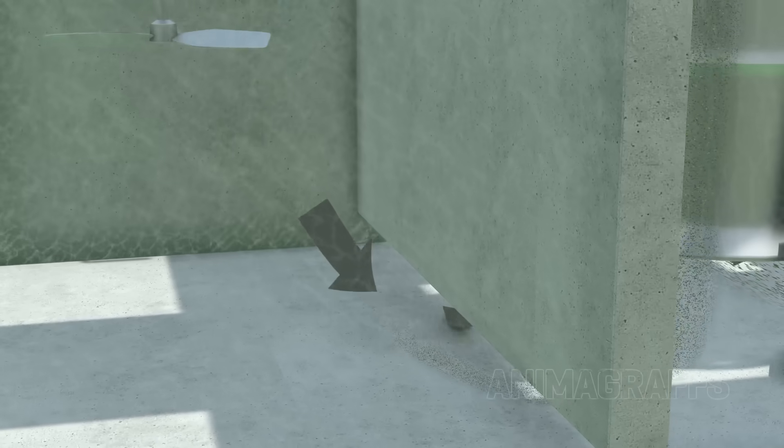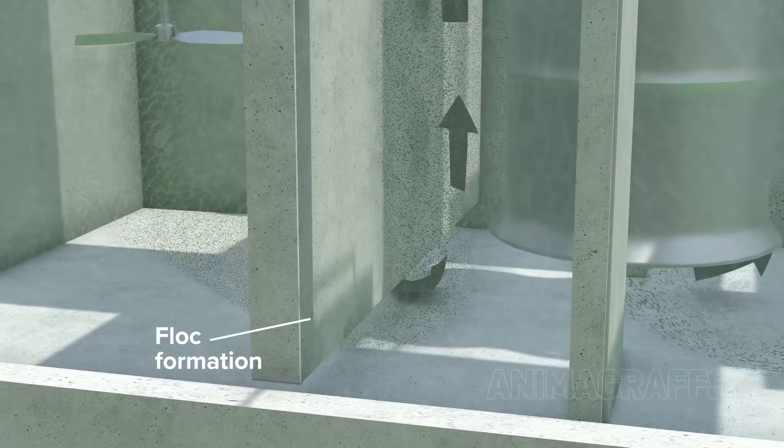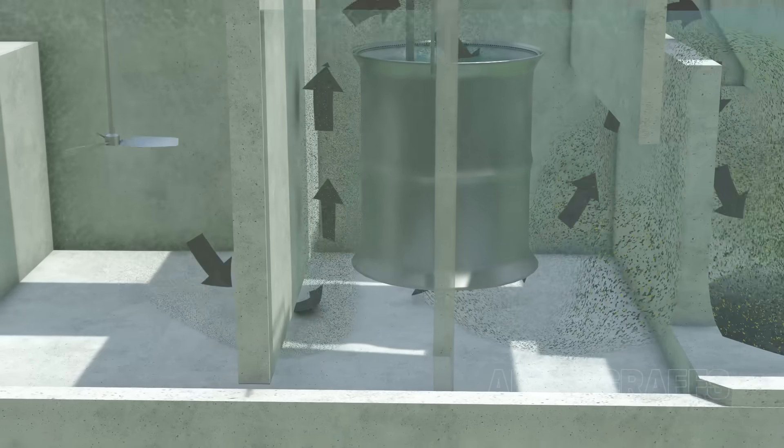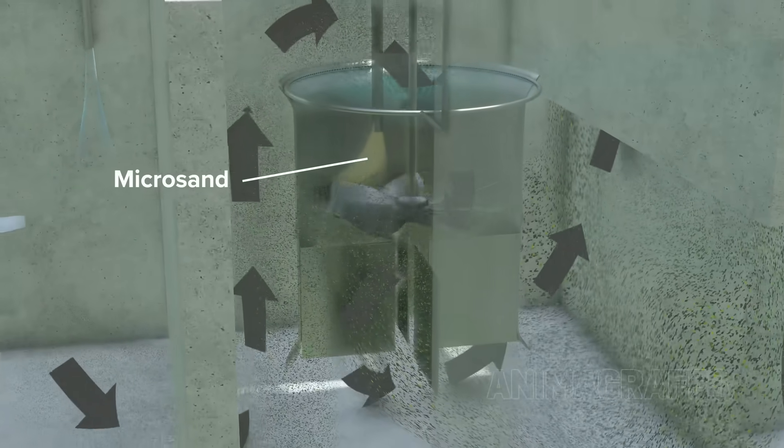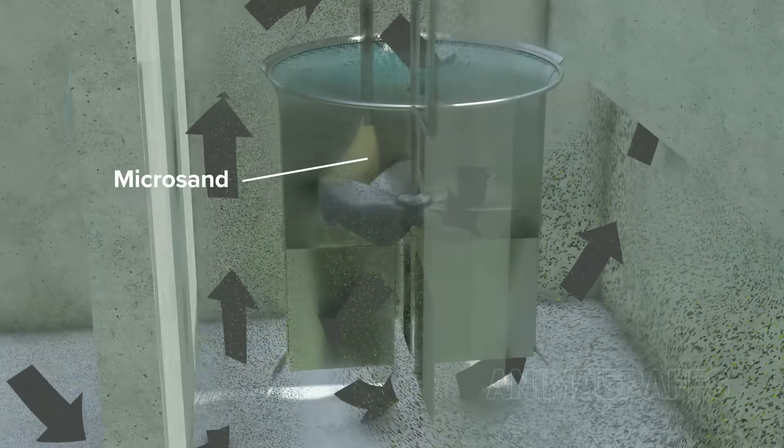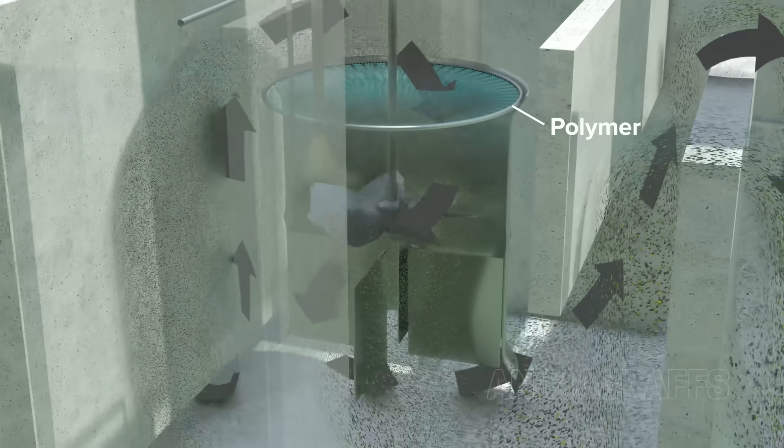The coagulant and water is vigorously mixed and flocc clumps start to form. To make flocc particles heavier and therefore even easier to eventually settle out, micro-sand is added as the water is drawn through a special mixing tube with a polymer to help the sand stick.